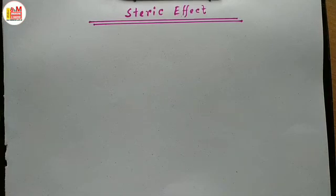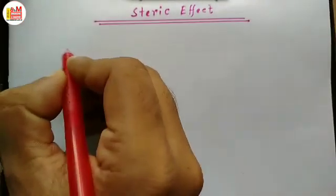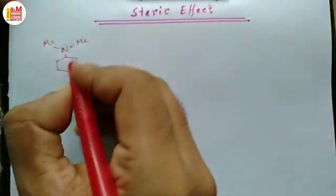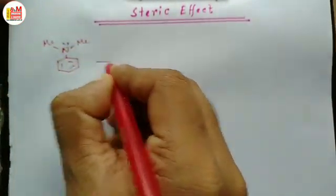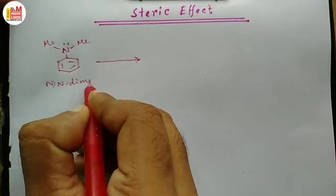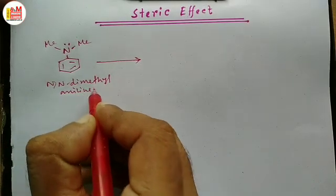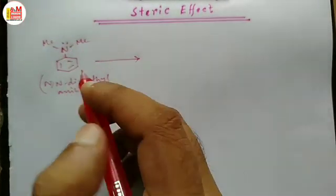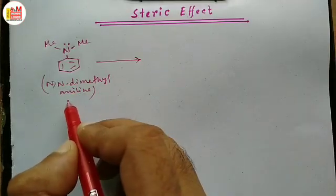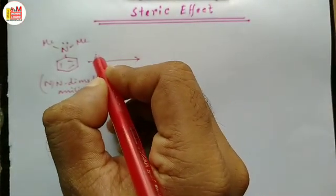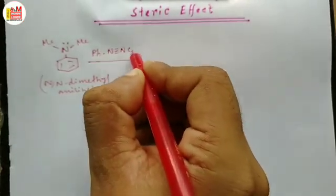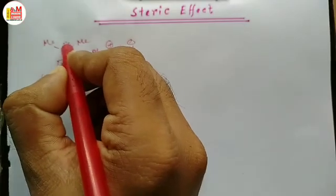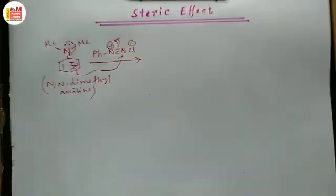Let's take an example of a coupling reaction. This is NN-dimethylaniline. If we had two H over here then it would be the normal aniline, but as we have two methyl groups in place of two hydrogens, that's why it is NN-dimethylaniline. If we take benzene diazonium chloride as the reagent, then the coupling usually occurs through the para position.